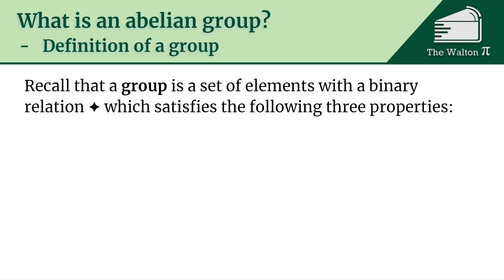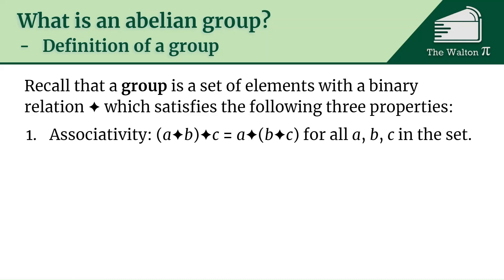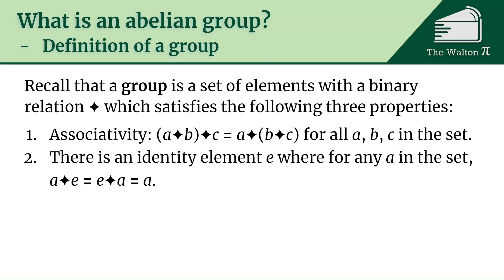First we're going to recall that a group is any set of elements that has a binary operation, which we'll just call star, which satisfies the following three properties. First it's associative, so if you do a star b and then star c, that's the same as doing a star b star c — the order that you do them does not really matter in this sense. There's also going to be an identity element, which we'll call e, so that no matter what a you pick in the set, a star e is e star a, which is just a.